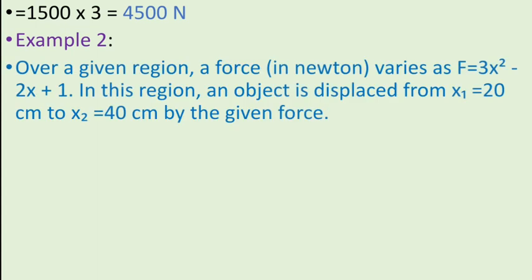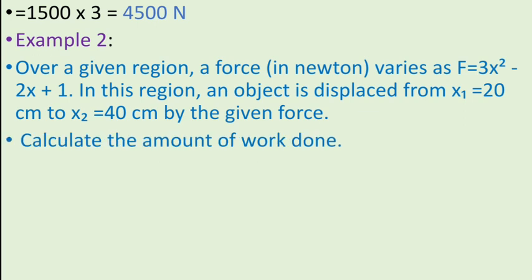Example 2. Over a given region, a force in Newton varies as F is equal to 3x square minus 2x plus 1. In this region, an object is displaced from x1 is equal to 20 centimeter to x2 is equal to 40 centimeter by the given force. Calculate the amount of work done.